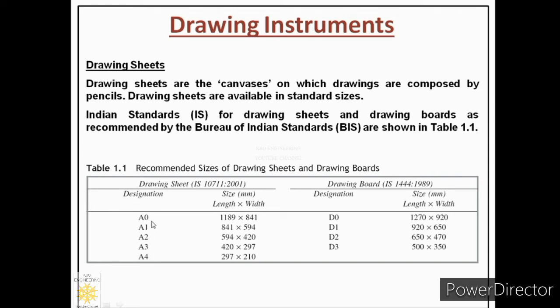As you can see over here different grades are labeled for drawing sheets. Normally we are familiar with this type of grade we call A4 size paper. So over here the size of this paper is mentioned, its length is 297 millimeters and its width is 210 millimeters.